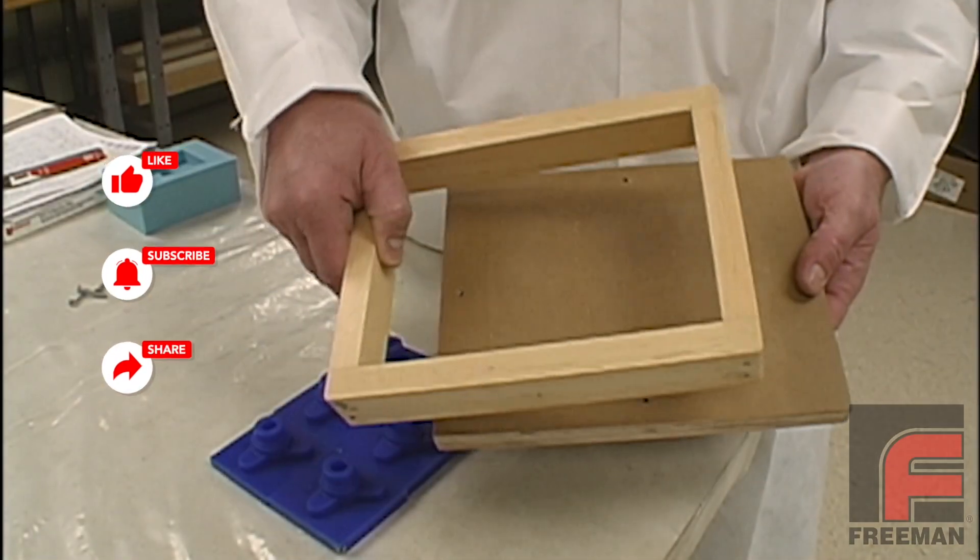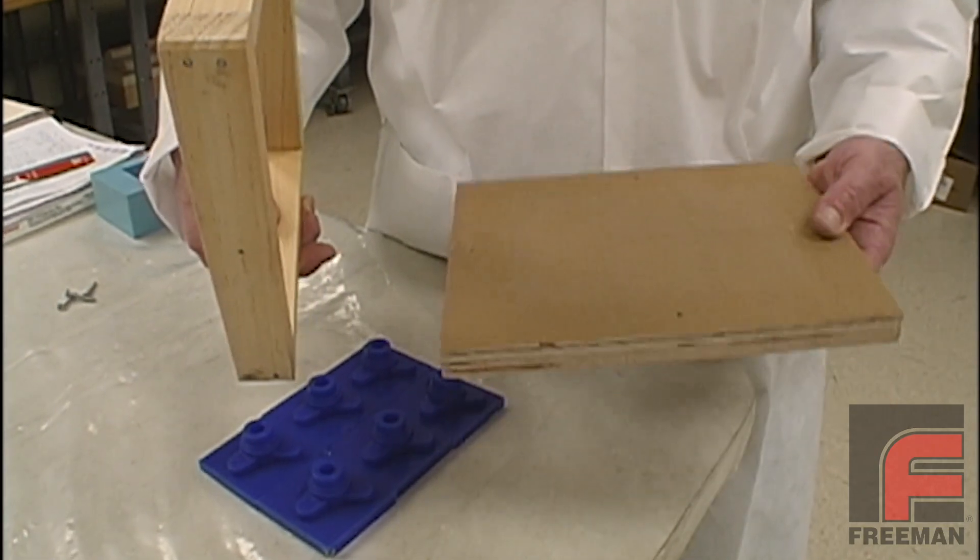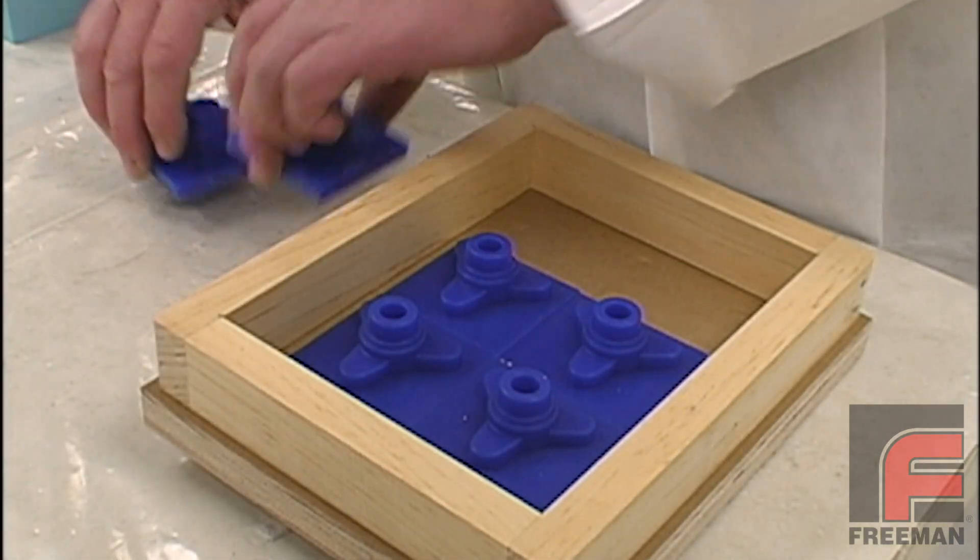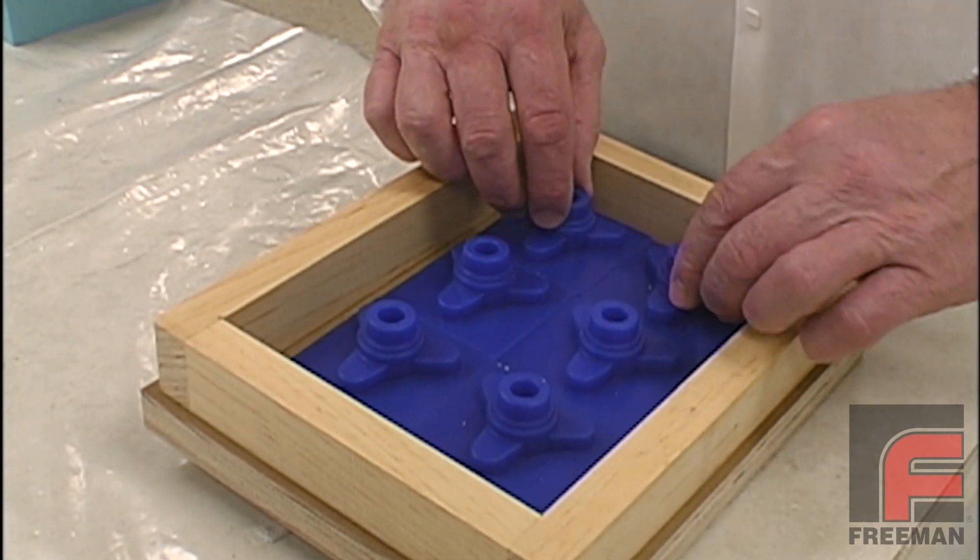Our mold frame is large enough to ensure at least three-quarters of an inch of silicone rubber will surround our models. Next, we position our models on the mold board to make sure they are properly centered.